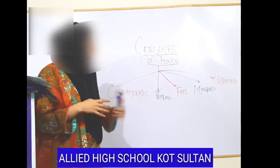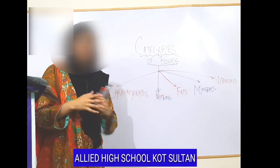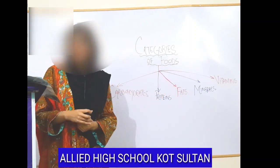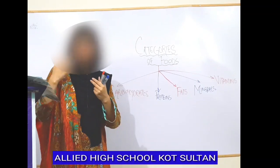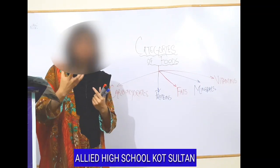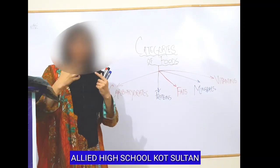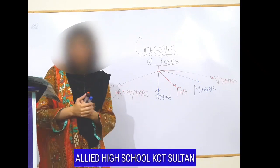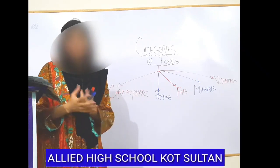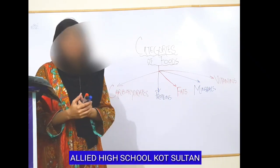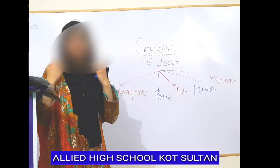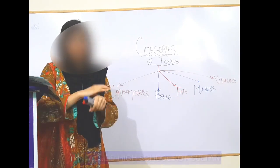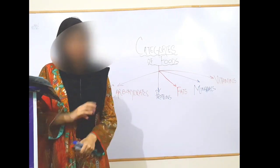The next category is minerals. Different minerals are involved in bone and teeth growth. We have calcium, phosphorus, and magnesium, which are involved in our teeth and bone growth. These minerals are required by the body.